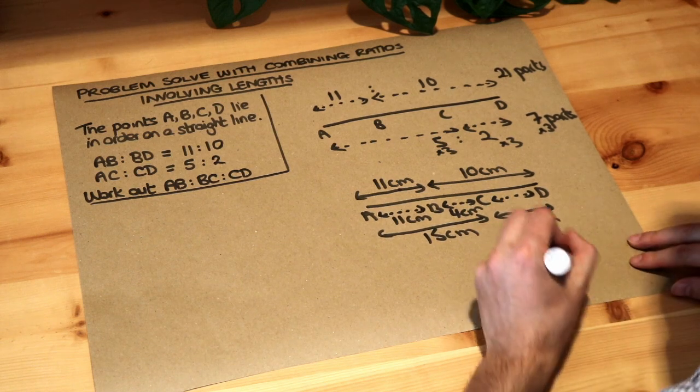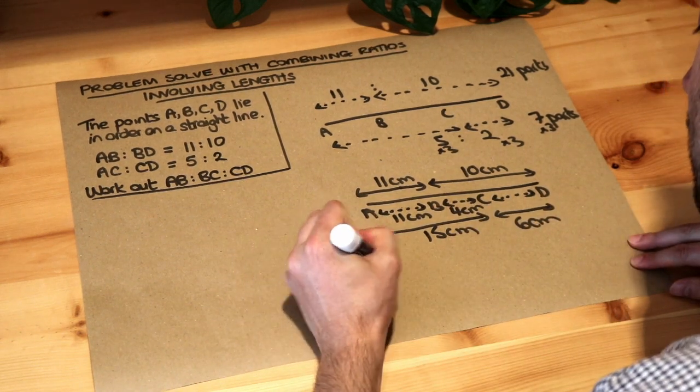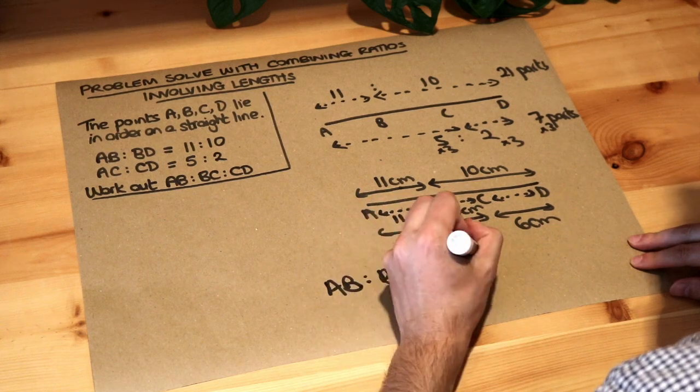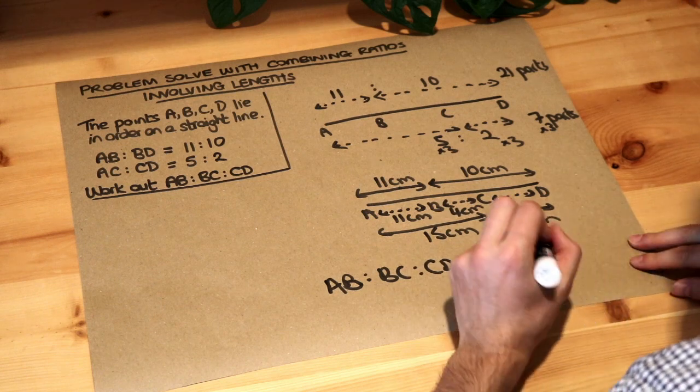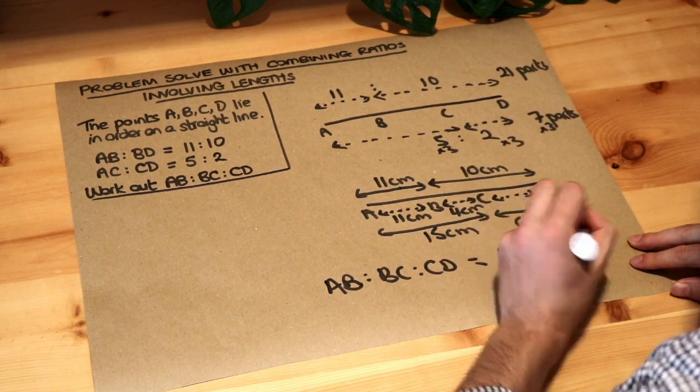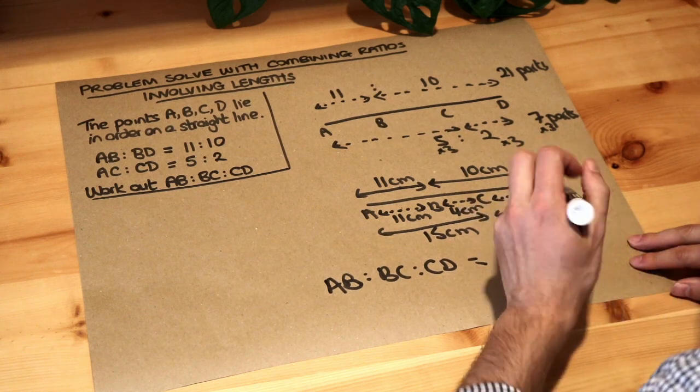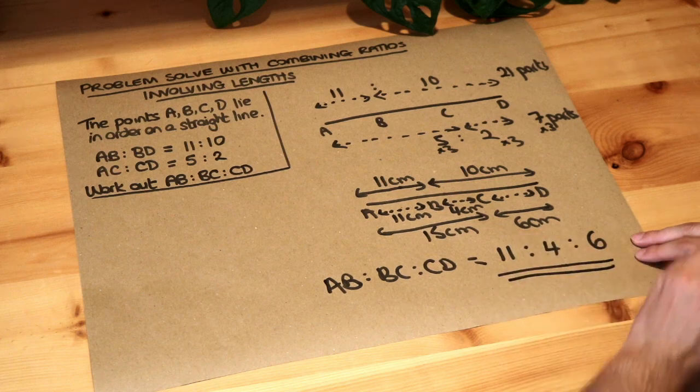And that means we're done, because now we've got AB to BC to CD. AB is 11. Let's drop the unit now because the unit was never there in the first place. BC is 4, CD is 6. Can we simplify that? No, we can't. So that is the final answer: 11 to 4 to 6.